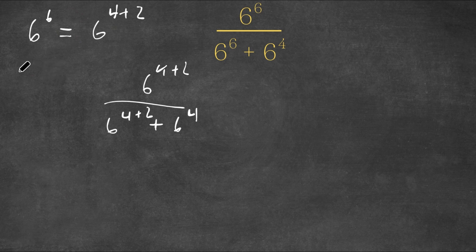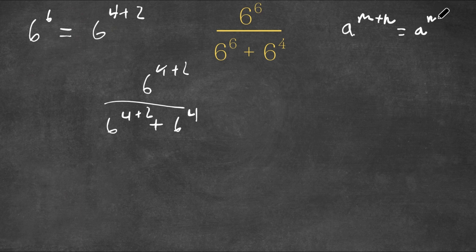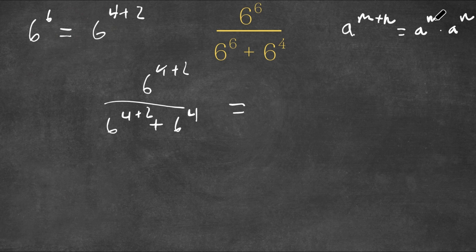Now if we have something in the form a to the power of m plus n, this is equal to a to the power of m times a to the power of n. So 6 to the power of 4 plus 2 — we can think of 6 as a, 4 as m, and 2 as n — so we'll have 6 to the power of 4 times 6 to the power of 2.